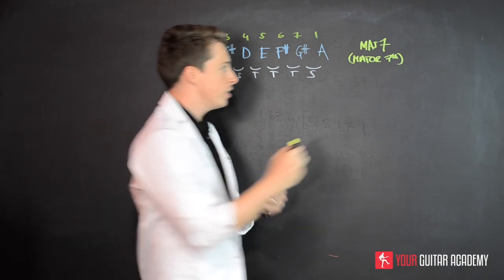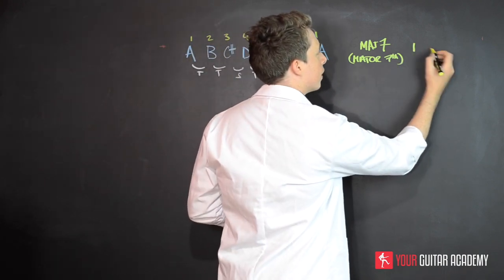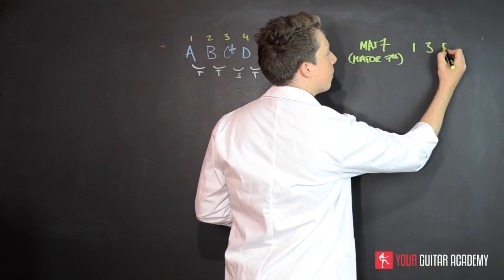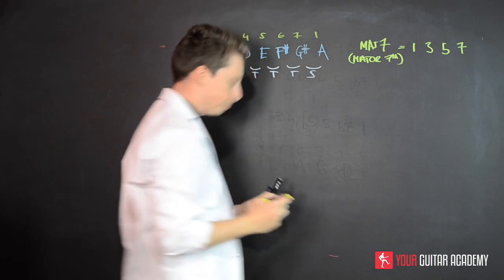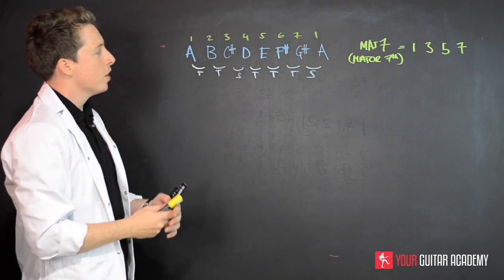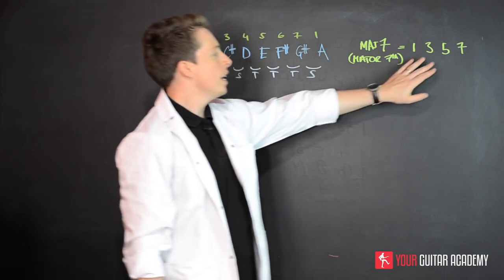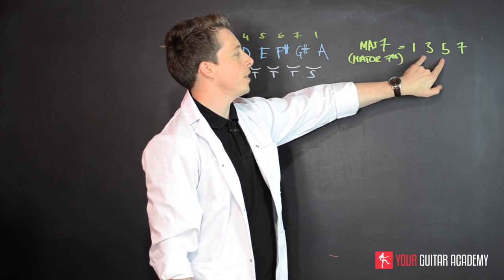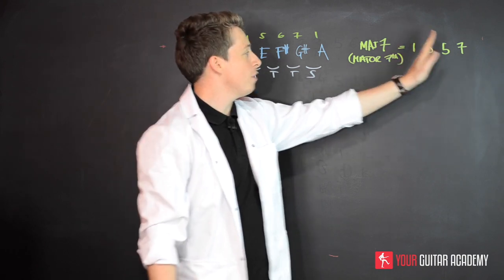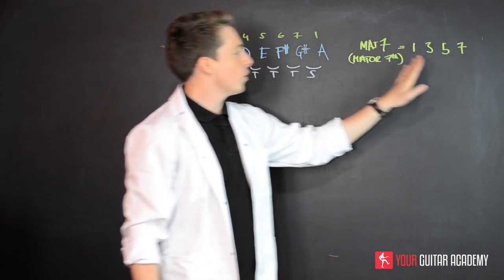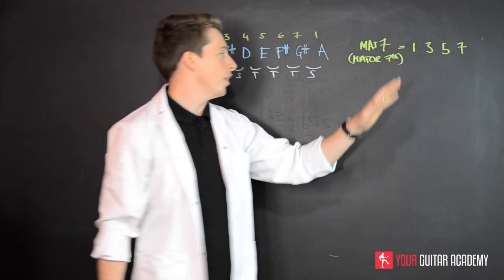The major seventh formula is root, third, fifth, and seven. Let's go through that: root, third, fifth, and seventh. If we look at the root, third, and fifth, this bit here is a major chord. If you just get rid of the seven, you've got a major chord with root, third, and fifth.